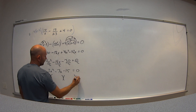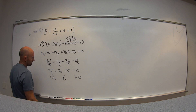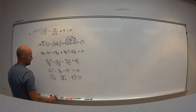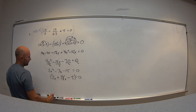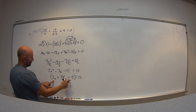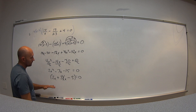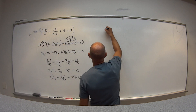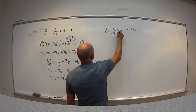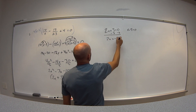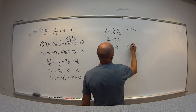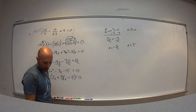See if this factors. I have 2x and x, I can do 5 and 3. Because one is plus and one is minus, I get minus 5 and plus 3. Checking: negative 5 times 2 is negative 10, plus 3 is minus 7. It does factor. Using the zero product property: 2x plus 3 equals 0 gives x equals negative 3 halves, and x minus 5 equals 0 gives x equals positive 5.